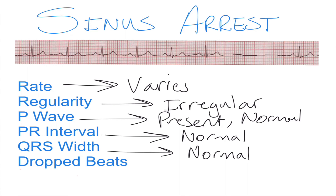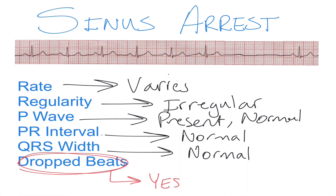From the sinoatrial block video, we introduced a characteristic called dropped beats, and we do have them present here in this rhythm. A dropped beat is a beat that should have occurred but didn't. With sinus arrest and sinoatrial block, we want to look at what's going on with this pause.